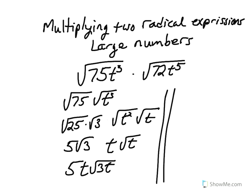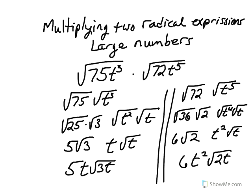Now do the square root of 72t to the 5th. Pause the video while you complete this problem. When you complete this problem, you end up with 6t squared times the square root of 2t. Please copy this into your notes and pause the video.